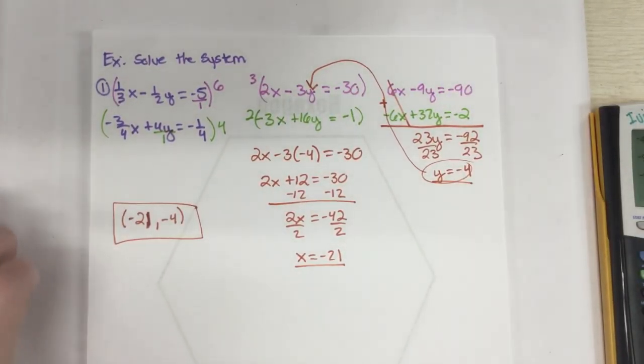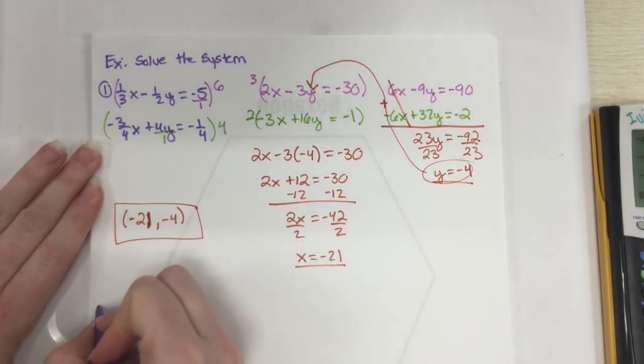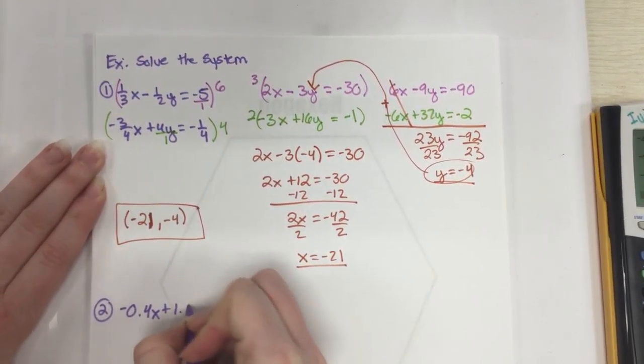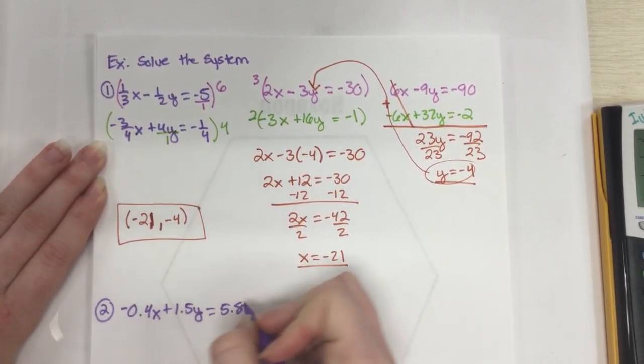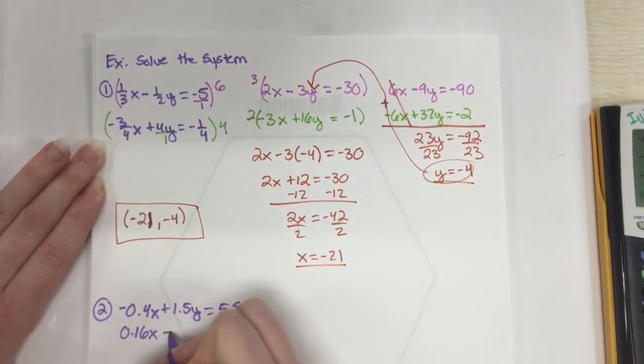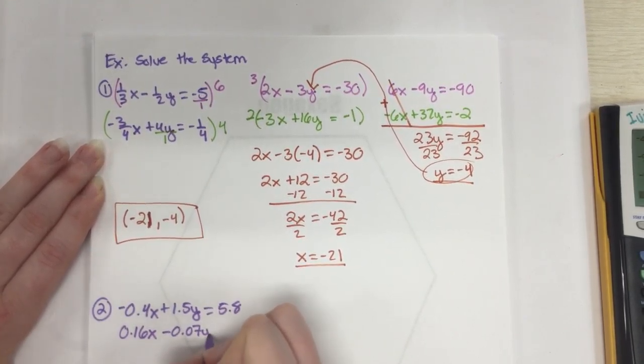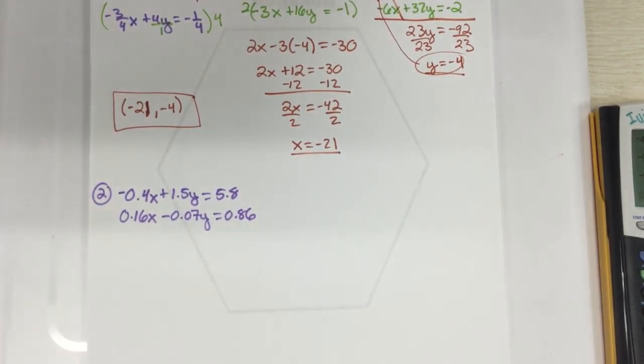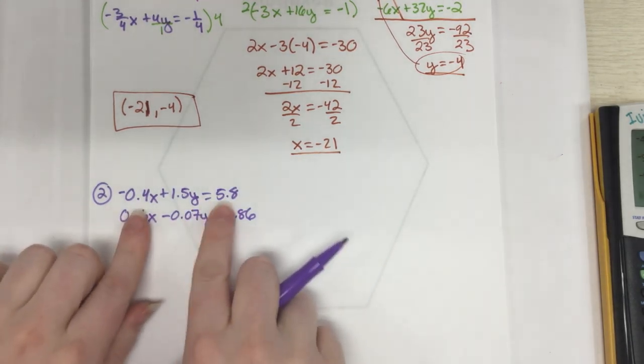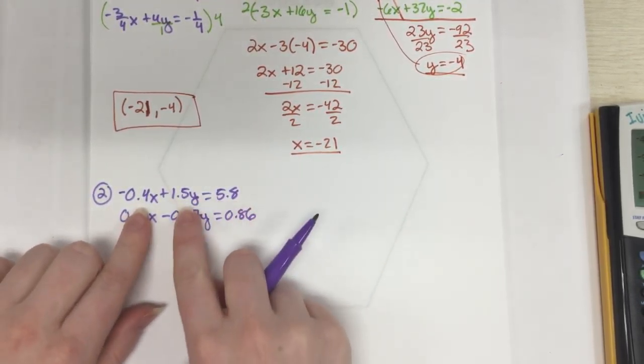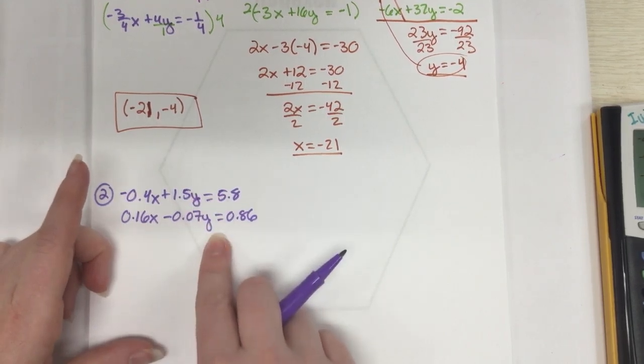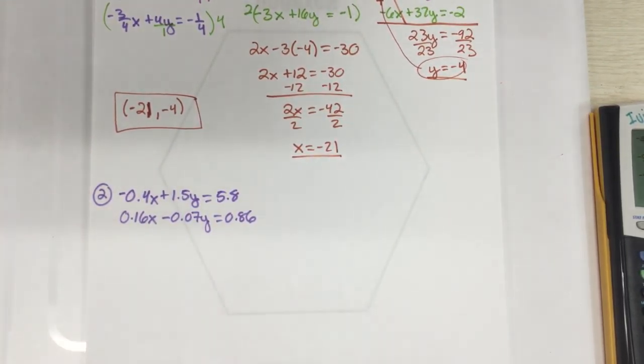The decimal one isn't much different, to be honest. We'll just get started on it. And if you want to finish solving it, you can. So it's negative 4x plus 1.5y equals 5.8. And 0.16x minus 0.07y equals 0.86. And so what we want to go ahead and do is solve this system. Okay. Looking again, I'm not in y equals mx plus b form. So graphing is stupid. I'm not in x equals and y equals form. So I'm not going to do substitution. But I am having my x's, my y's, and my constants lined up. So I can do elimination pretty easy.